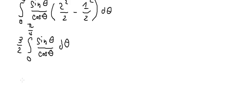And this one, we get negative 3 over 2, ln of the absolute value of cosine θ, and we have the boundary from 0 to π over 4.